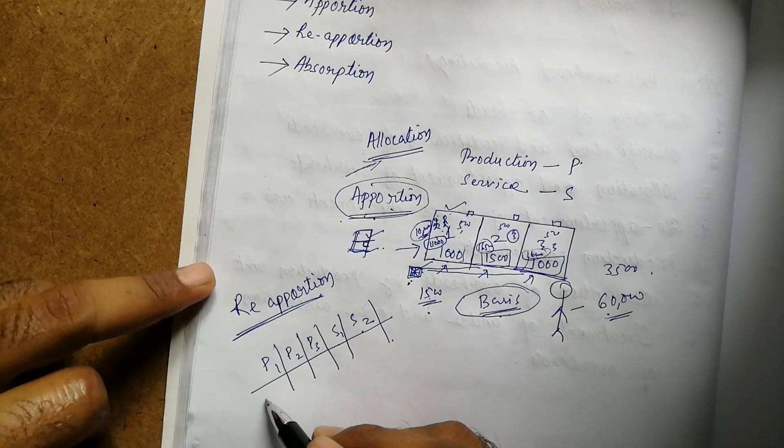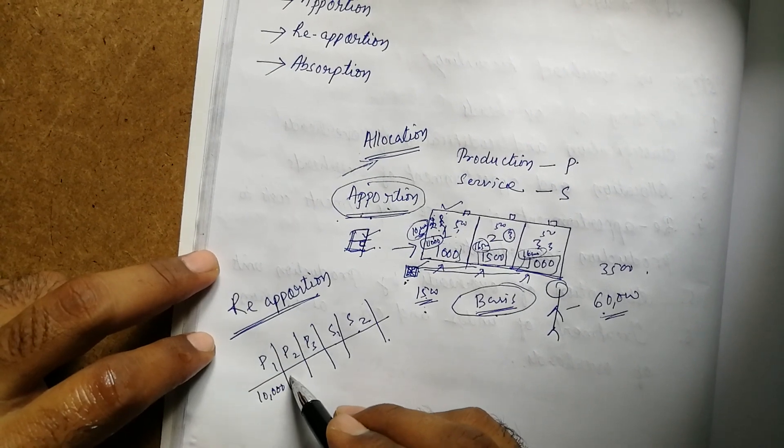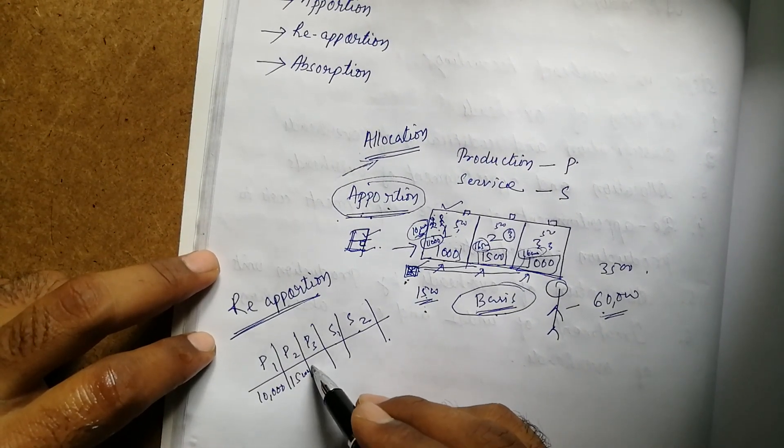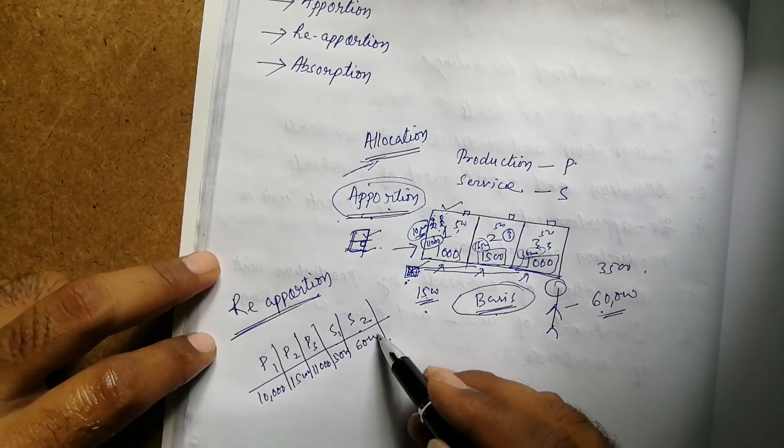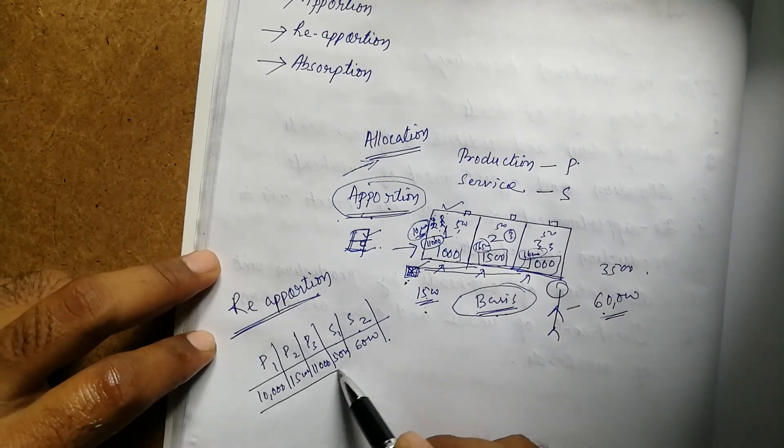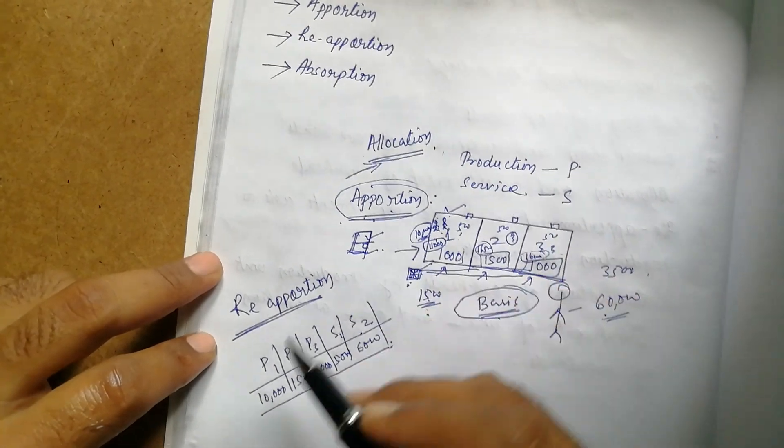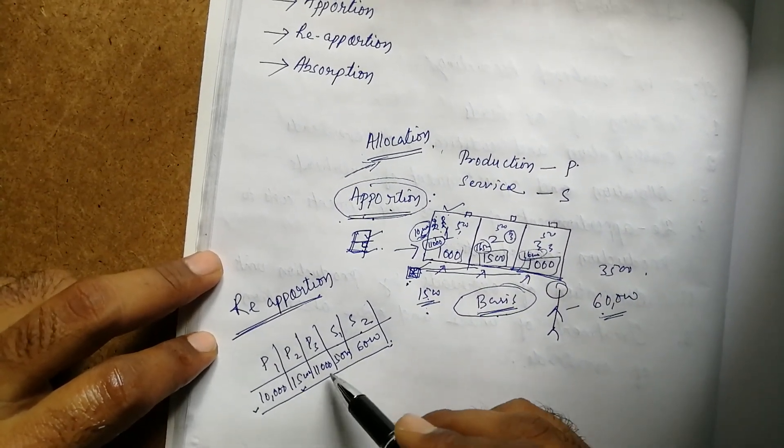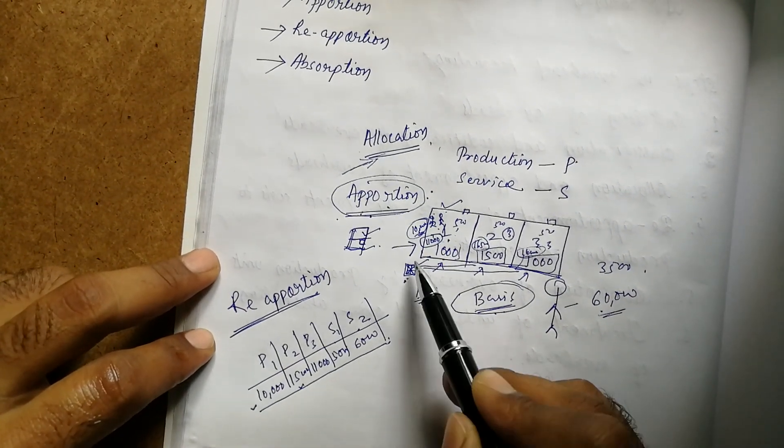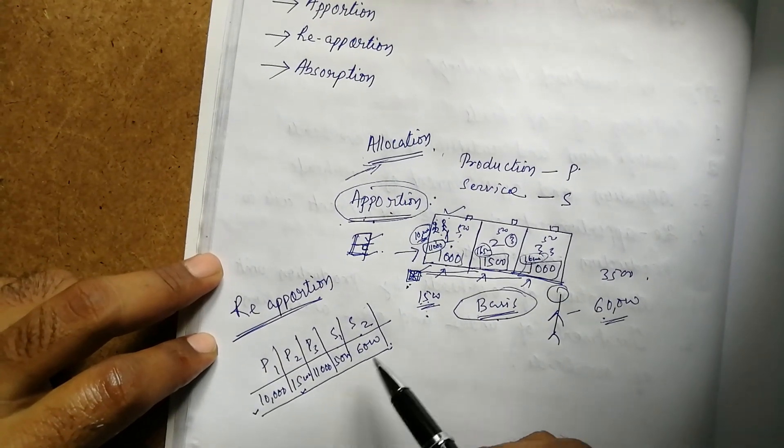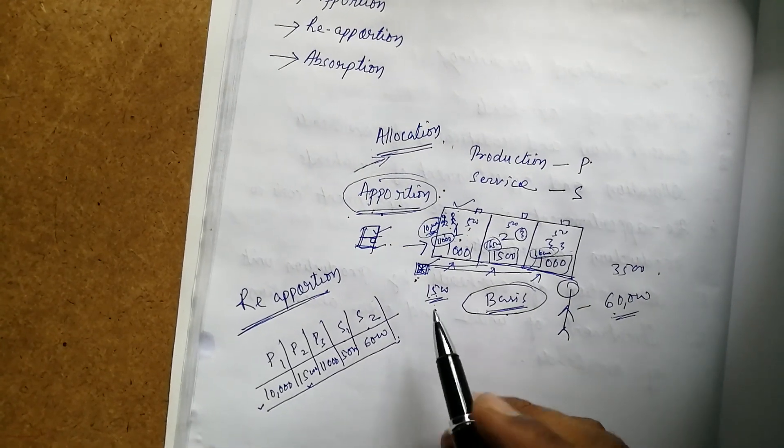Now, suppose P1 has total expenses of 22,000. These are cost centers. P2 has 15,000, P3 has 11,000, S1 has 5,000, and S2 has 6,000. Now, these department-wise expenses after allocation and apportion—we know P1 has 22,000 expenses, P2 has 15,000 expenses, and so on. First, direct expenses go to cost centers, then common expenses are distributed, giving us the total.